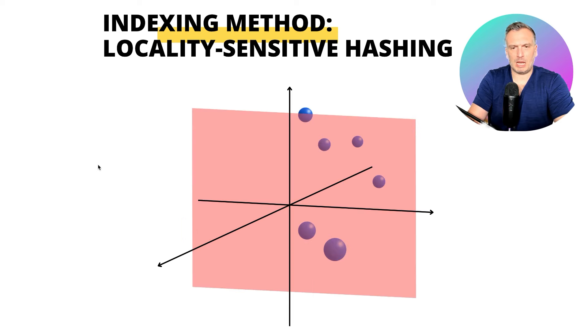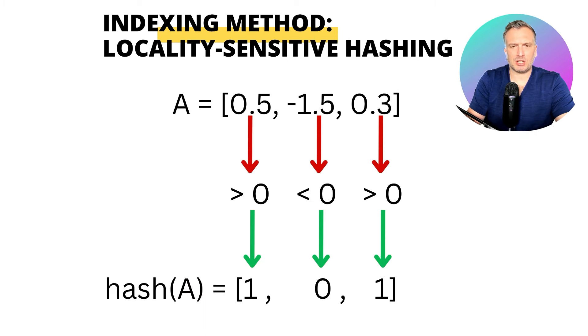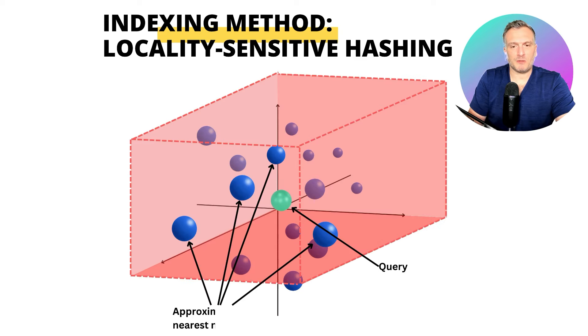For example, the plane passing by the z-axis can separate the vectors below and above. Similarly, we have the hyperplane passing by the x-axis, and the hyperplane passing by the y-axis. We can then hash every vector depending on where they belong in that projected space. When we have a query vector, we just retrieve the vectors that belong to the same quadrant of space.